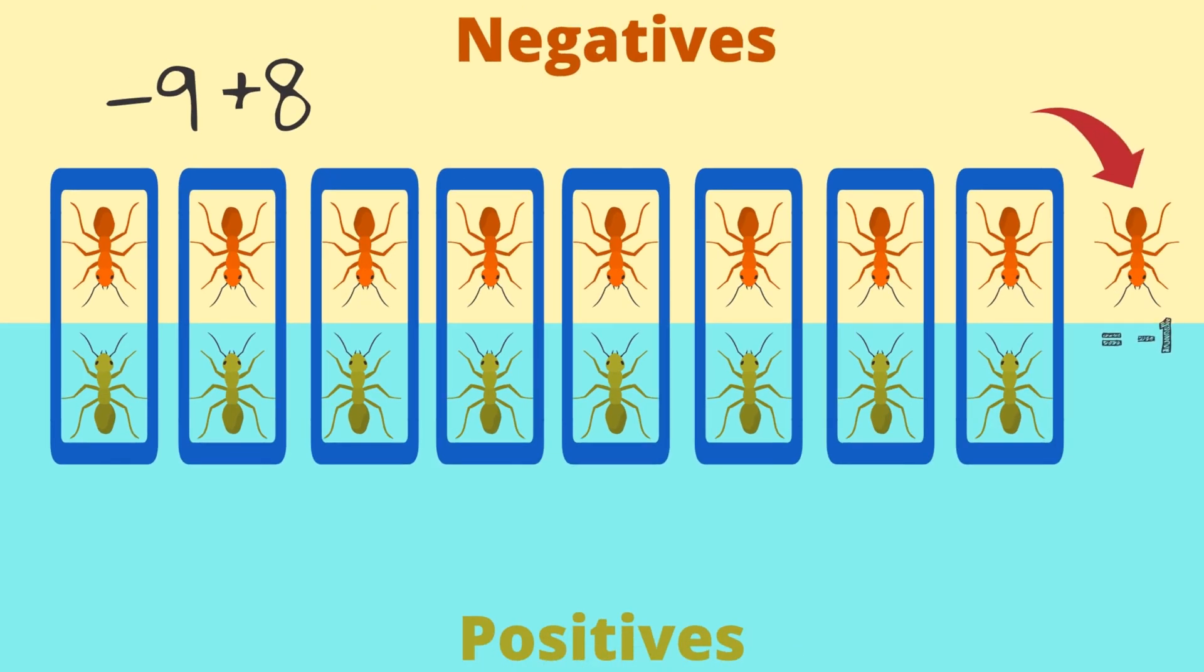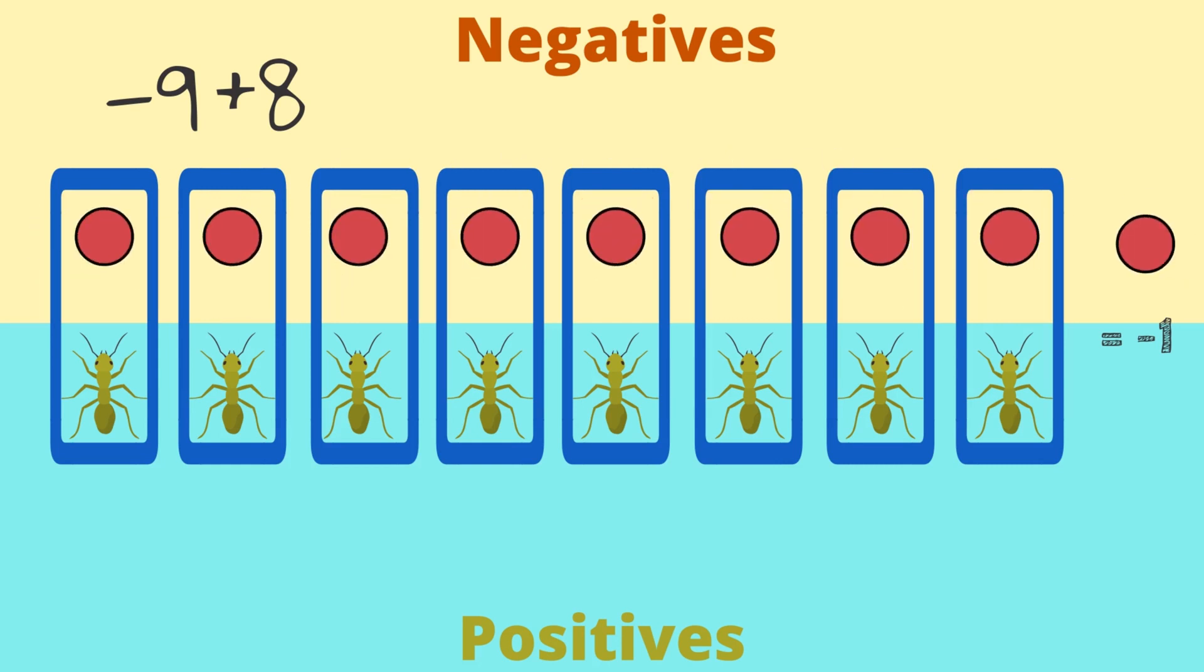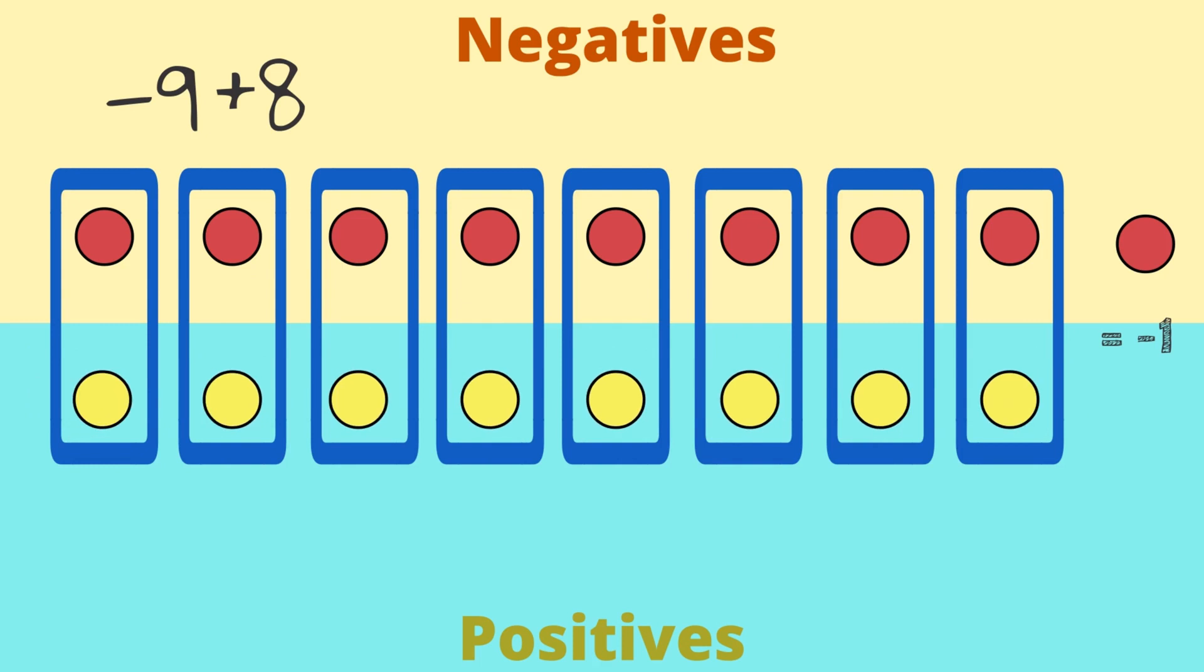which is the same as negative 1. We can also use 9 red counters to represent the number negative 9, and 8 yellow counters to represent the number positive 8. Every negative and positive form a pair that is equal to 0. We call these zero pairs.